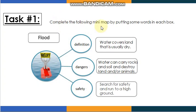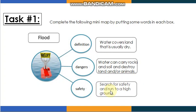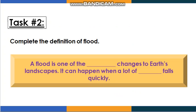Let's go to task number one: complete the following mini map by putting some words in each box. The definition: water covers land that is usually dry. The dangers: water can carry rocks and soil and destroy land or animals. Safety: search for safety and run to high ground.